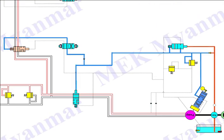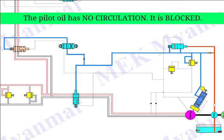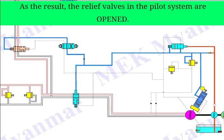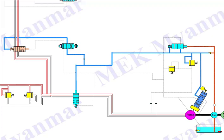Now, you can see that the pilot oil has no circulation. It is blocked in the system. Although the auxiliary pump is running at rated speed, the pilot oil is blocked. As a result, the relief valves in the pilot system are opened. At this moment, the pilot pressure relief valve, which is set about 12 to 15 bar, is opened.